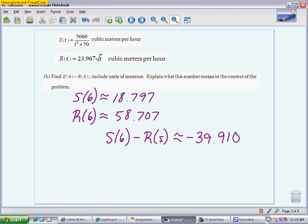My unit, since when you're subtracting, your units don't change. So I'm working with cubic meters per hour minus cubic meters per hour. So my unit is still cubic meters per hour. And I think most students can successfully do that. They can do the subtraction, they can get the answer, and they can get the unit.